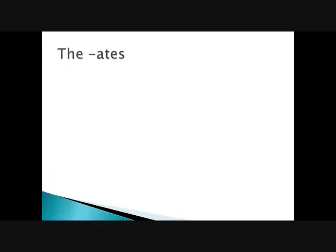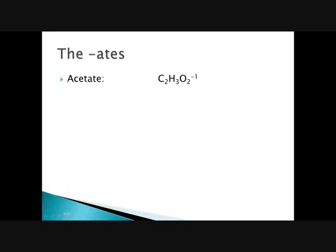The first list we have are the eights — all of the names end in -ATE. The first one is acetate, which is C₂H₃O₂ with a negative one charge. Make sure when you're writing them you use the correct format: subscript numbers are below and the charge is written higher up. Pay attention to capitalization as well. Next, we have carbonate, which is CO₃ with a negative two charge.